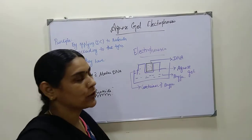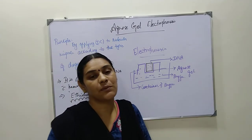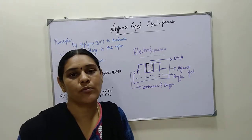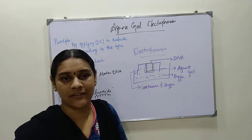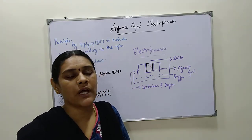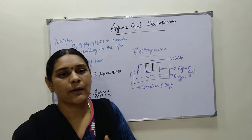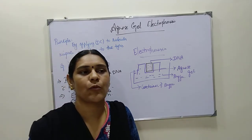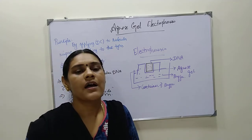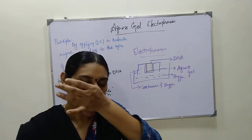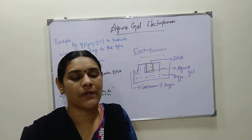Good morning students. Today I am going to explain a very interesting and very important topic from the exam point of view. So this agarose gel electrophoresis is a technique. Still now we saw about what is a vector, what is genetic engineering, what are plasmids, what is restriction endonuclease enzyme, what is alkaline phosphatase, what is DNA ligase, different kinds of enzymes, different kinds of fermentation — all these genetic engineering tools and introduction we saw.